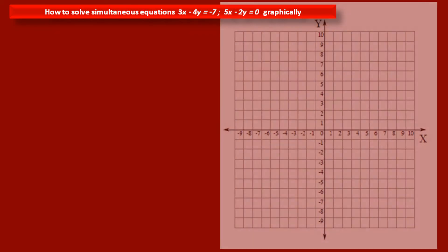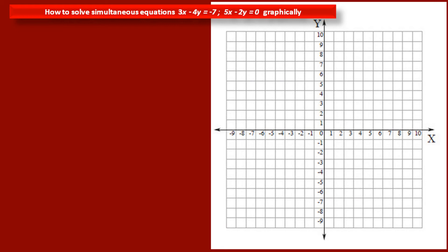Friends, now on this graph page, we have to draw graphs of this given equation. These are linear equations, so their graphs are straight lines. That means we have to draw two straight lines for these two equations. To draw a straight line, we need at least two points on the line, so first we have to find out two points of each equation.